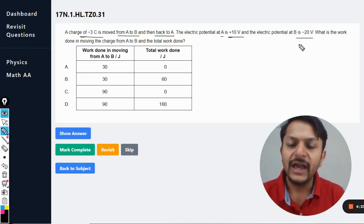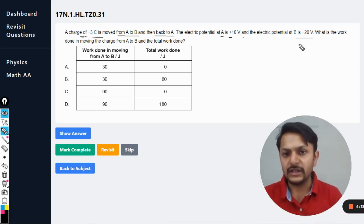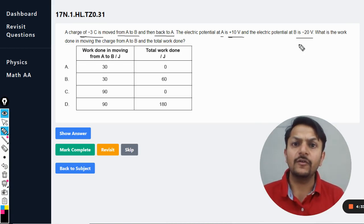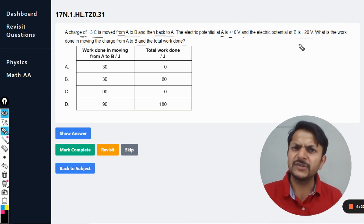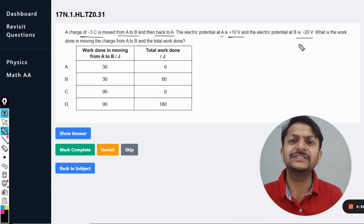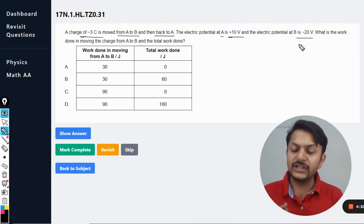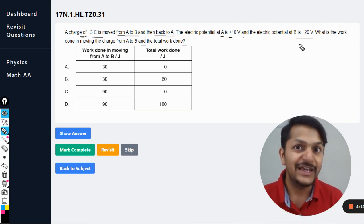Well, the total work done will come out to be equal to zero because we did this in topic 2 where we covered work energy power. All these fields are conservative fields including the gravitational field, including electric field, including the magnetic field.